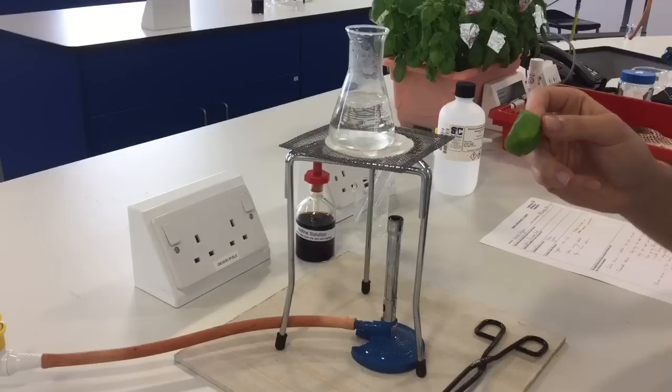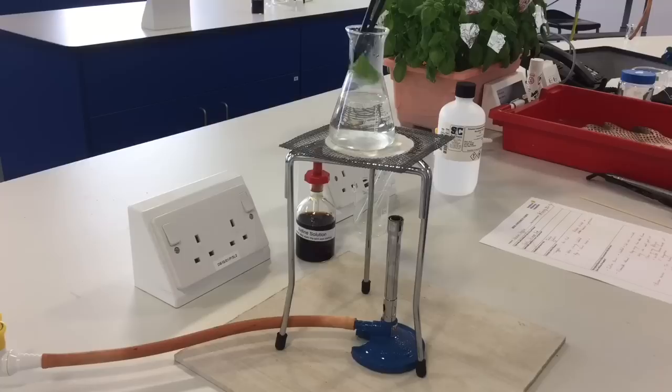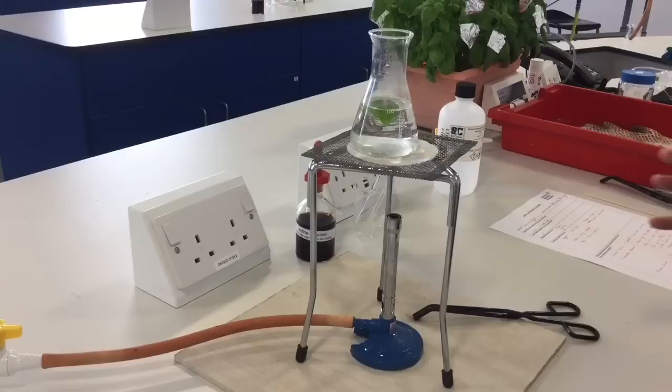What we're going to do is heat it in about 100 milliliters of water, just so it's completely submerged, for a few minutes to soften it up a little bit. Put your leaf into some water that we can then heat over the Bunsen burner for a couple of minutes.